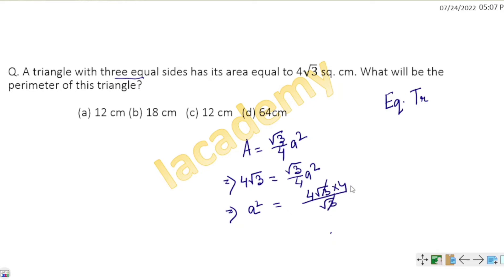Using the area formula, we get 16 for a squared, so a equals 4. The perimeter of an equilateral triangle formula is P equals 3a. So 3 into 4 gives us the answer.